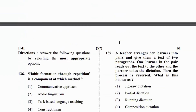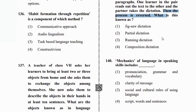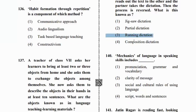Next question: a teacher arranges learners in pairs and gives them two paragraphs. One learner studies a little and the partner takes dictation. Then the process is reversed — the other child does the dictation. What is this process known as? Jigsaw Dictation, Partial Dictation, Running Dictation, or Composition Dictation? The answer is Running Dictation.